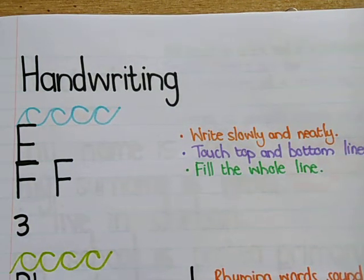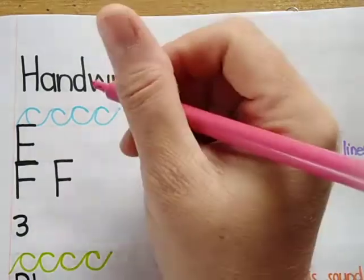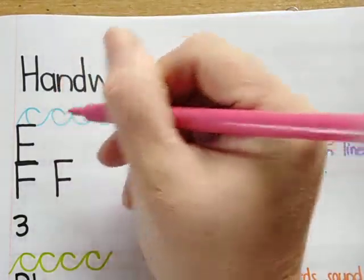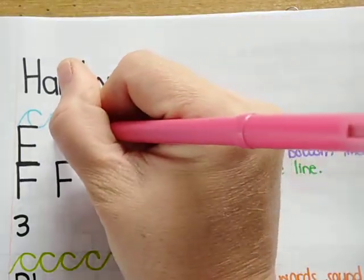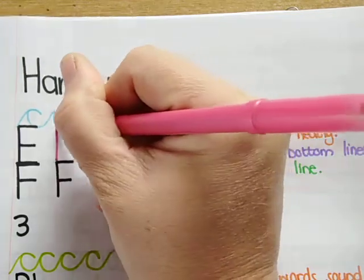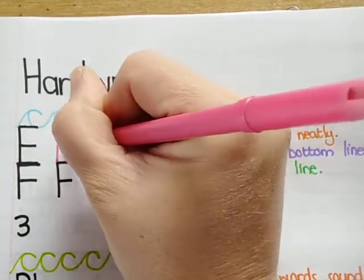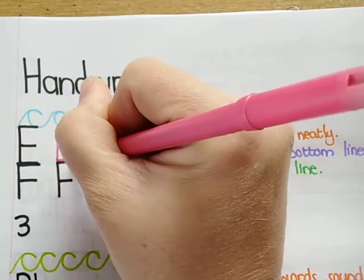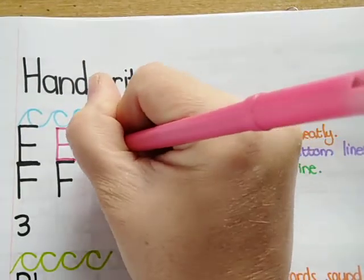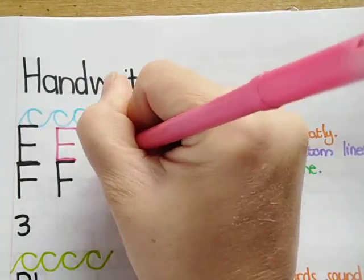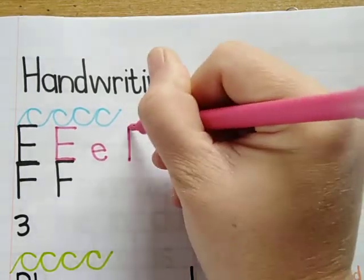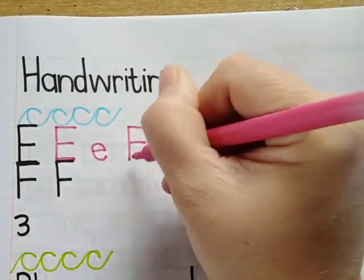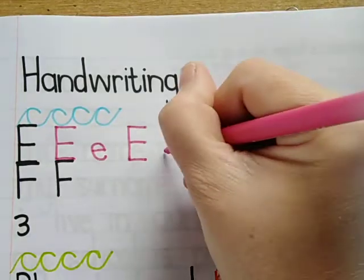It's good to know how to make these big daddy capital letters because remember they go at the beginning of a sentence or a name. Here we go: soldier line, sleep line, sleep line, sleep line, and then I make this small one.